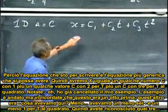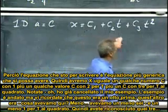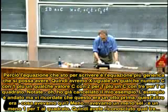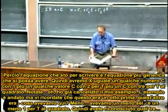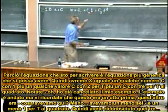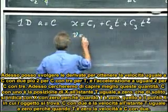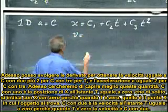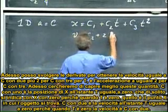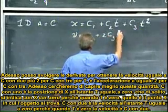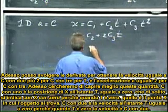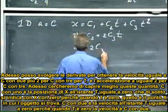You would have seen this was an eight before, and we had minus six T, and we had plus one T squared. So you recognize these three. I can now take the derivative, and I get C2 plus two C3 times T, and then I get the acceleration equals two C3.